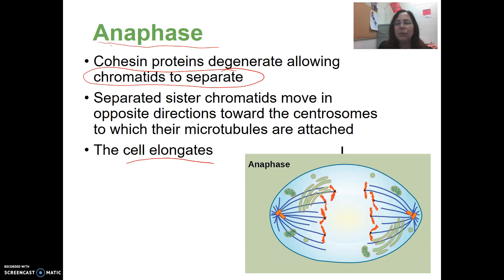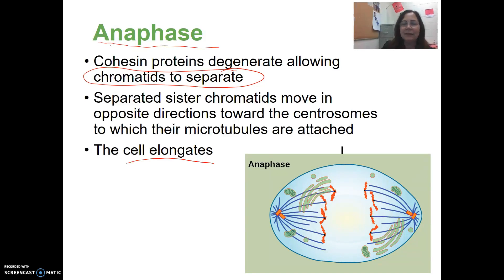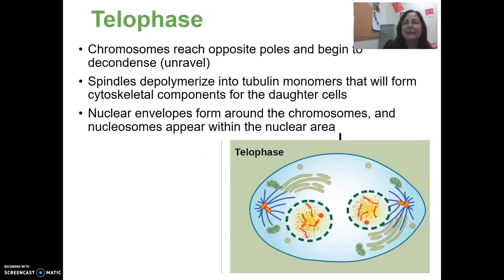You won't see any forming of a cleavage furrow or a cell plate in anaphase — that's how you can tell the difference between anaphase and telophase under the microscope. In anaphase, the cell will not have started cytokinesis yet. So if it's an animal cell, it will not have formed a cleavage furrow, and if it's a plant cell, it will not have formed a cell plate.